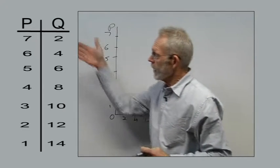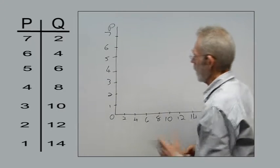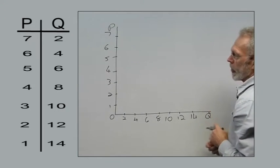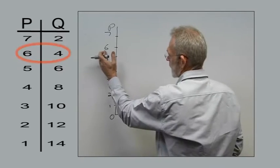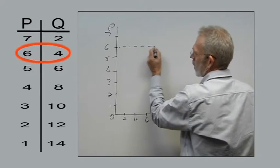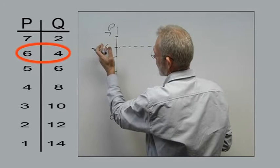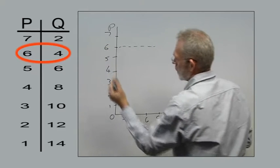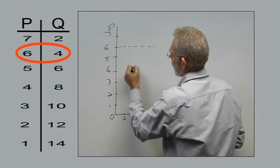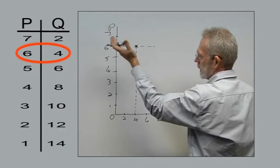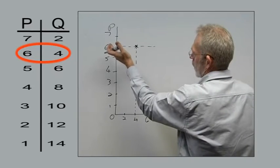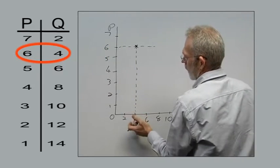Now we need to indicate the combinations in the table on the diagram. If we take, for instance, the price value of 6, we can see at a price of 6, quantity demanded equals 4. So, at this point demonstrates the combination of 6 and 4.